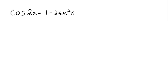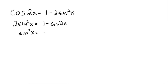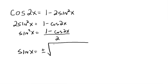This video is on the half-angle identities. Suppose we have the cosine of 2x. We know that's equal to 1 minus 2 sine squared x from our double angle identities. So let's take this formula and solve for sine. That means 2 sine squared x equals 1 minus cosine of 2x, which means sine squared x equals 1 minus cosine of 2x, all divided by 2. Therefore, the sine of x equals plus or minus the square root of 1 minus cosine 2x, all over 2.